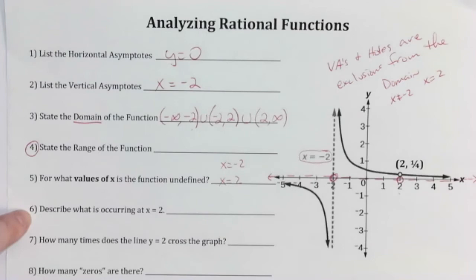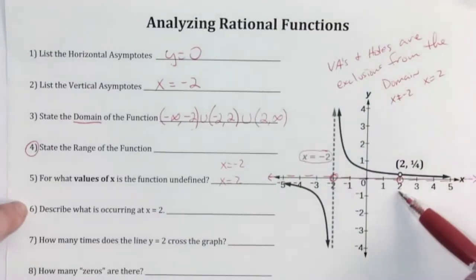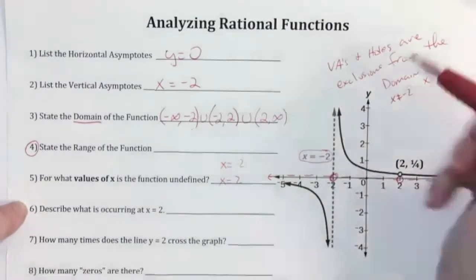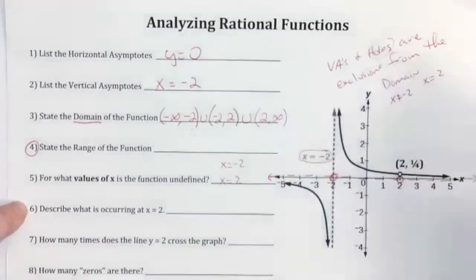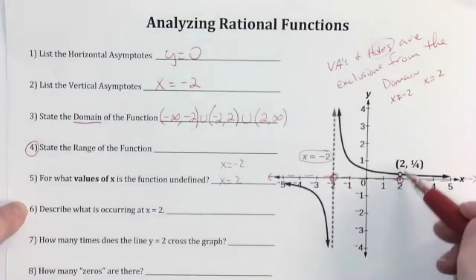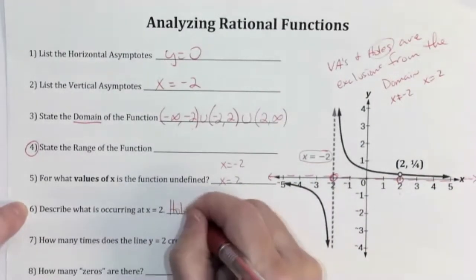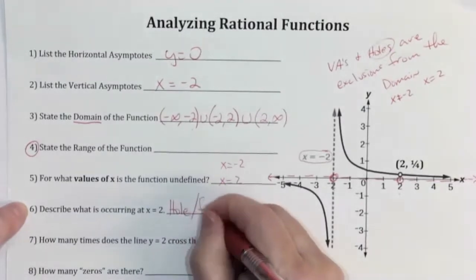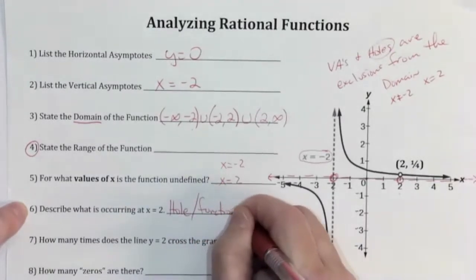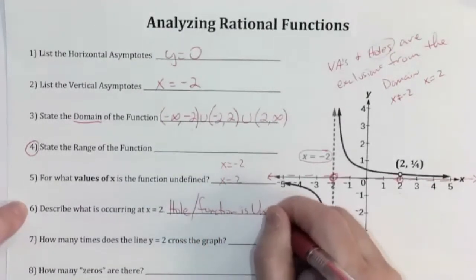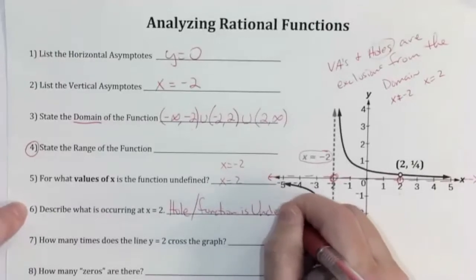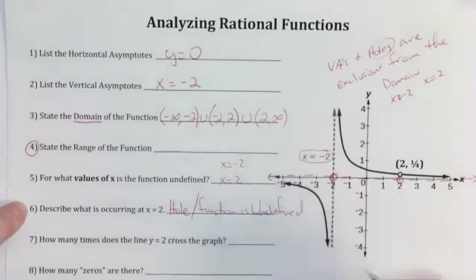We can do question six now. It asks: describe what is occurring at x equals two. The vocabulary word I used earlier applies here — there is a hole. The function is undefined there. So you could say there's a hole, or you could say the function is undefined. Either of those would be acceptable.